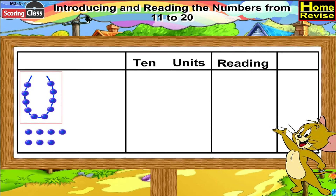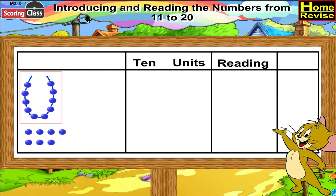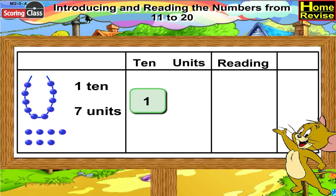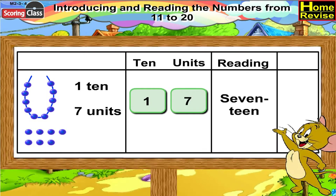We have a string of ten beads and seven extra beads. So under tens you will write one, and under units we have seven. We will read it as seventeen, or ten and seven.